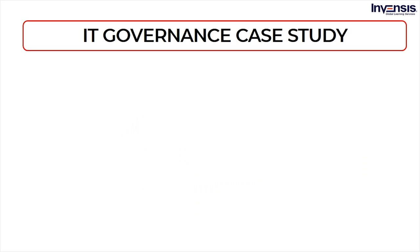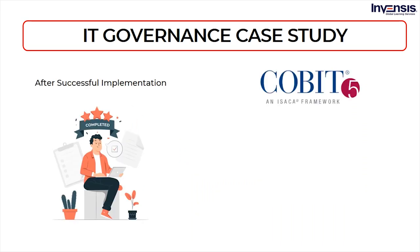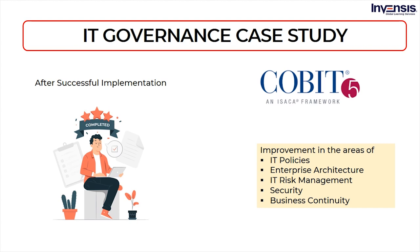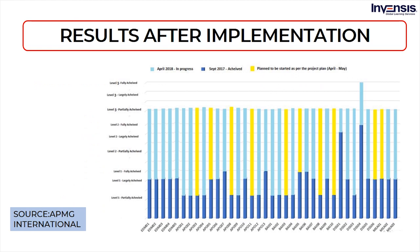Keeping the objectives in mind, and after successful implementation of COBIT 5 framework, the improvement observed is in the areas of IT policies, enterprise architecture, IT risk management, security, and business continuity. Overall, using COBIT 5 as a standard was found to be successful. Apart from simply reaching the requirements, banks find that they have an improved level of quality in the areas of IT policies, enterprise architecture, IT risk management, security, and business continuity to name a few. The graph represents the progress of one of these banks in 2018, which indicates a strong increase into level 3.